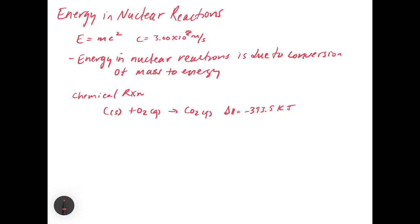If we wanted to use E equals mc squared to figure out how much mass that corresponds to, we could say, if E is equal to mc squared, then the mass would be equal to the energy divided by the speed of light squared.